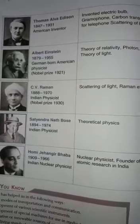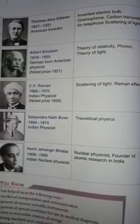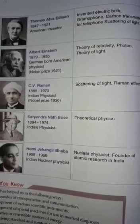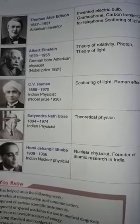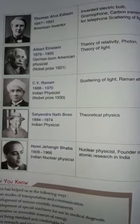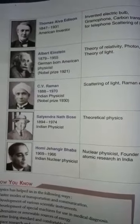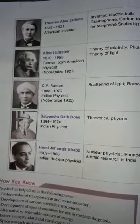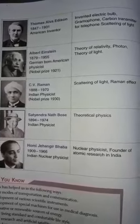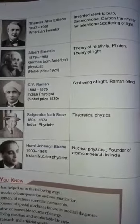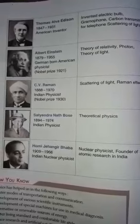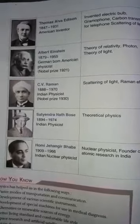Albert Einstein discovered the theory of relativity, the photon theory of light, and he was awarded the Nobel Prize in 1921. Next is C.V. Raman. He was an Indian physicist who worked on the scattering of light and discovered the Raman effect. He was awarded the Nobel Prize in 1930.